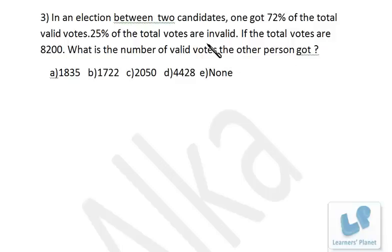Now 25% of the votes were invalid, that means 75% will be valid. 75% is 3 by 4. These are the valid votes. This person given over here got 72%.